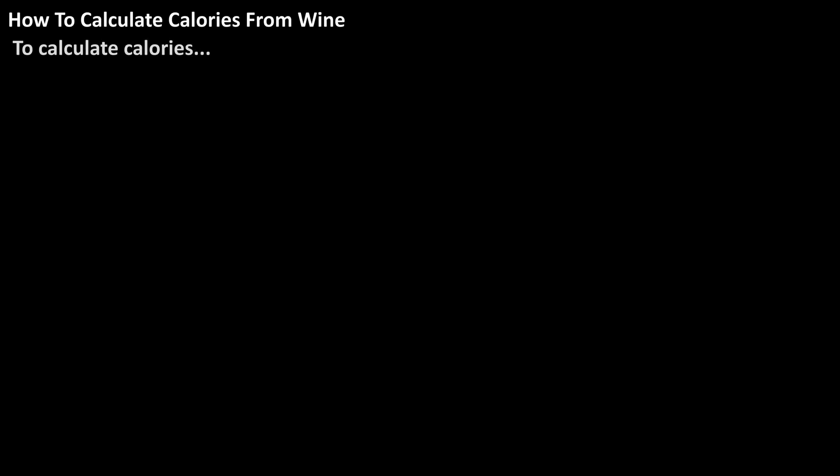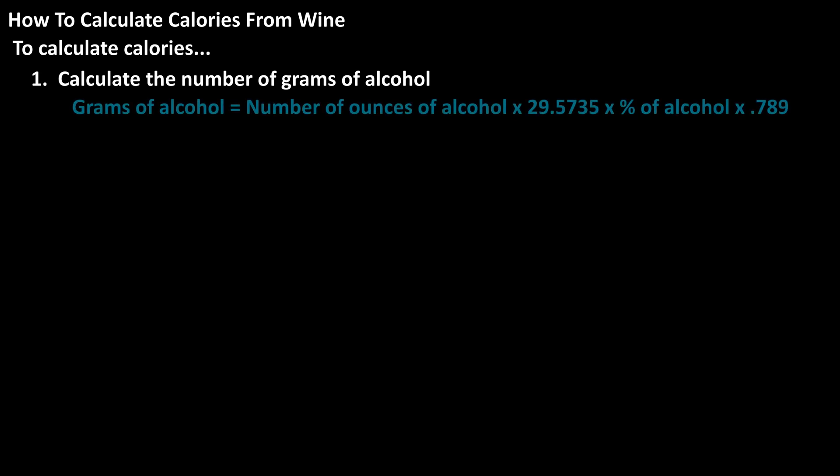To calculate the number of calories in wine, we first have to calculate the number of grams of alcohol in the wine. The formula to calculate the number of grams of alcohol in wine or any alcoholic beverage is: grams of alcohol equals the number of ounces of the alcoholic beverage times 29.5735, times the percentage of alcohol, times 0.789.